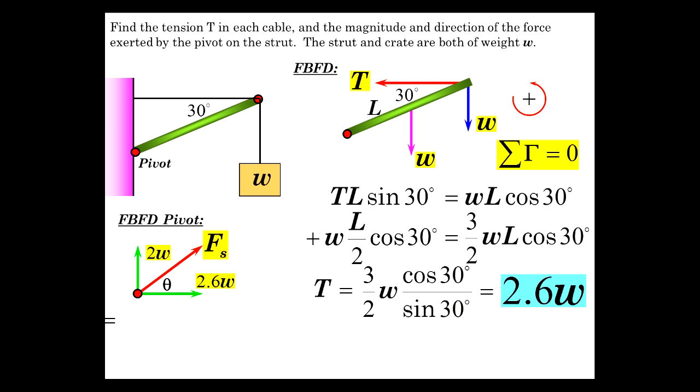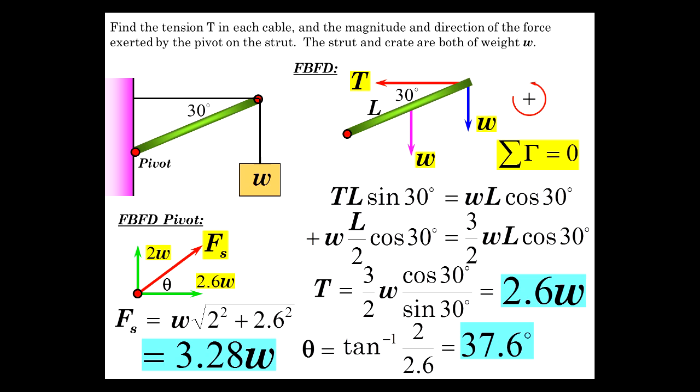So there's our sum of the forces. Pythagorean theorem gives us 3.28W. And now the angle is, and be careful, don't assume that the angle of the pivot on the strut is the same angle that it extends away from the wall. It's generally not going to be such. So it's inverse tangent of 2 over 2.6, 37.6 degrees. Note that that angle is not based on any direction the strut is going per se. It just has to do with the amount of force acting upward and acting to the right to keep it in equilibrium.